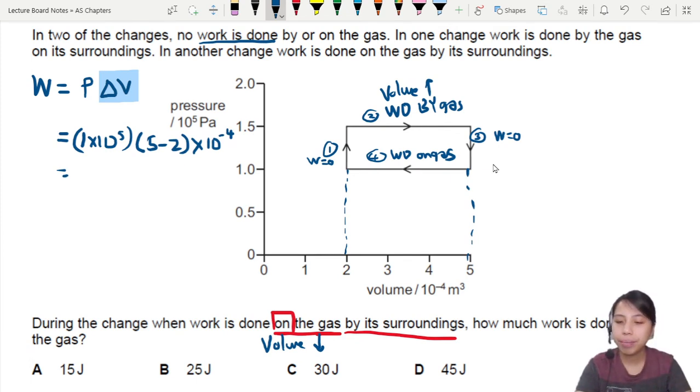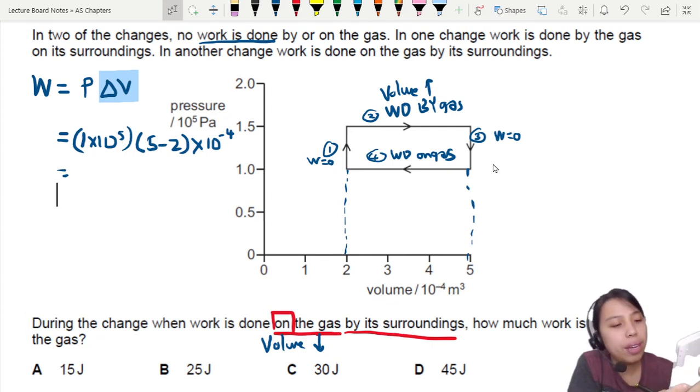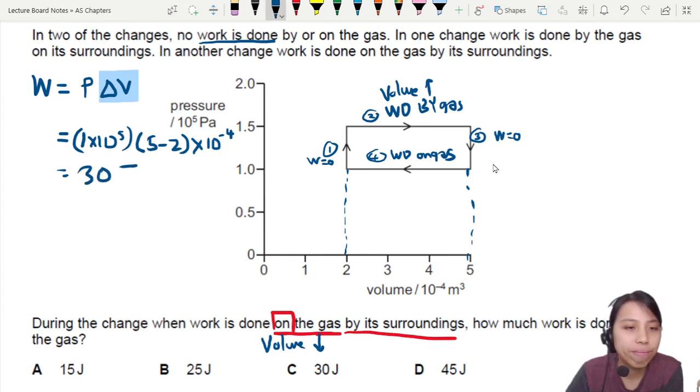Let's press calculator. This will be my calculator. One times ten to the five times three times ten to the negative four. I've got 30 joules. So 30 joules is my answer here.